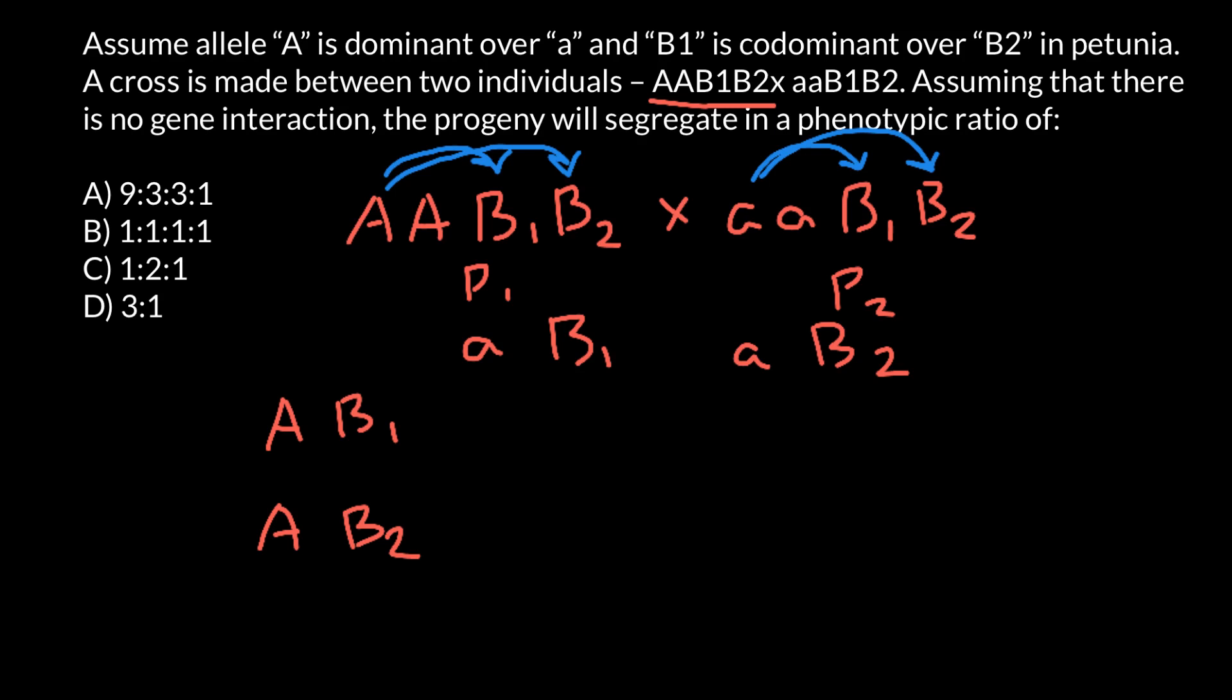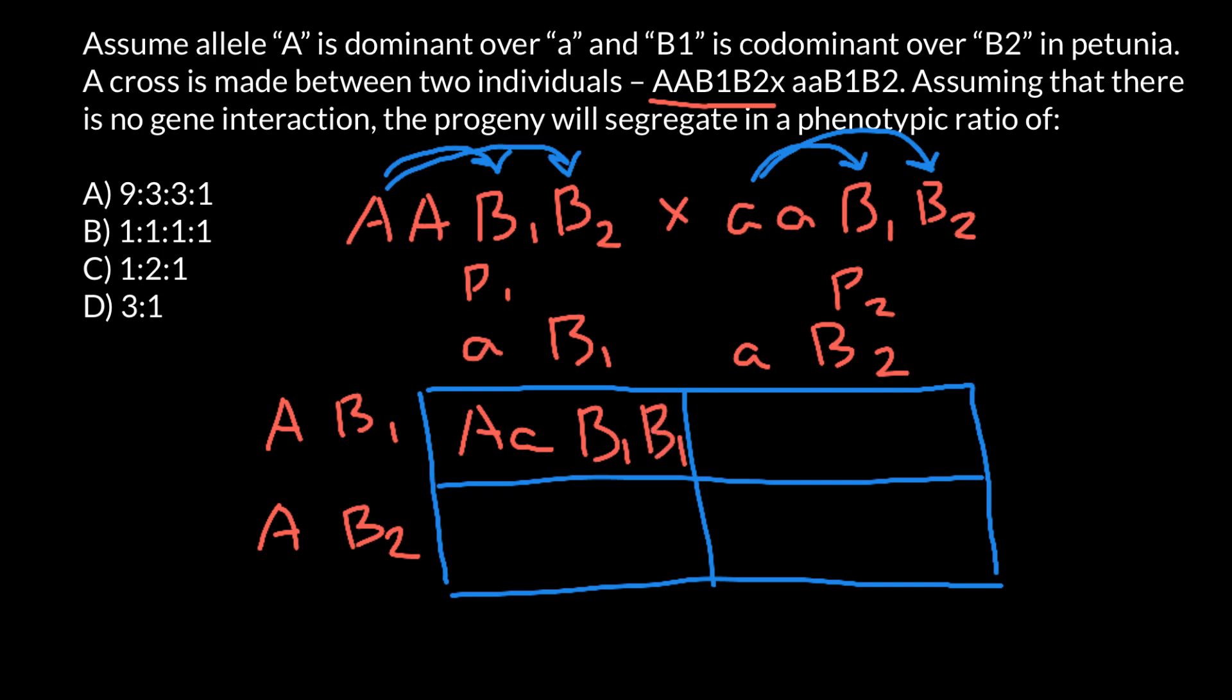Now let's build simple Punnett square and find the genotypes and phenotypes of the progeny. So here in the first cell, genotype would be capital A, small a, and B1, B1. Here we have capital A, small a, and B1, B2. Here we have capital A, small a, and B1, B2. And capital A, small a, B2, B2.